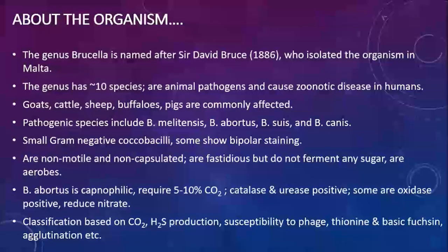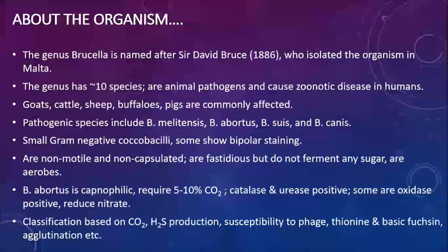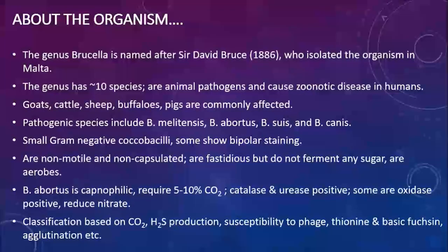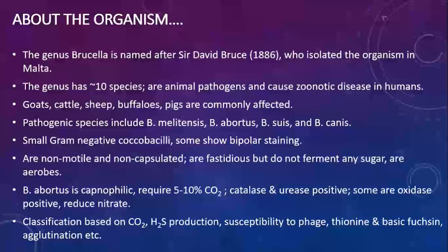The animals commonly affected include goats, cattle, sheep, buffalo, and pigs. Among the many species of Brucella, the most pathogenic one is Brucella melitensis — the number one important species. Apart from that, other species such as Brucella abortus, Suis, or Canis can also cause infections, but the most important one remains Brucella melitensis.